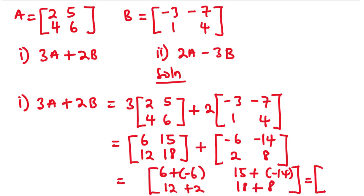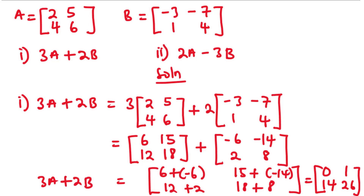6 plus negative 6 is 0. Therefore, the matrix 3A + 2B is equal to [0, 1, 14, 26].